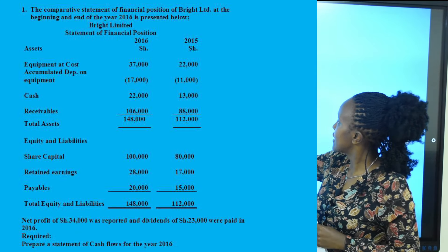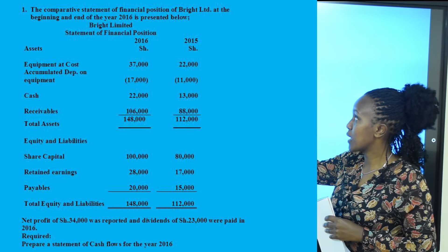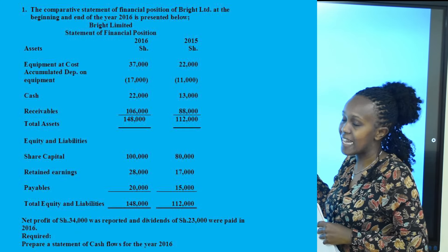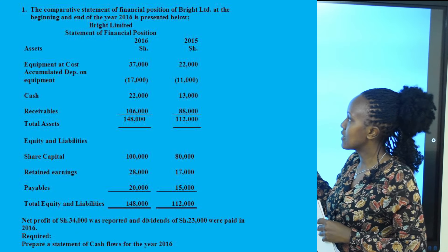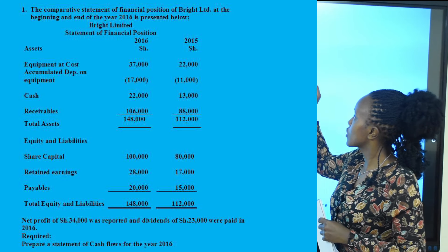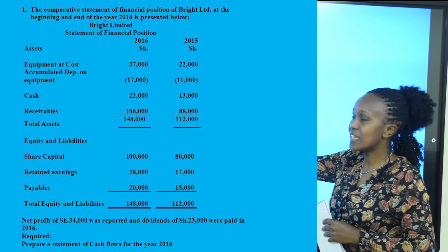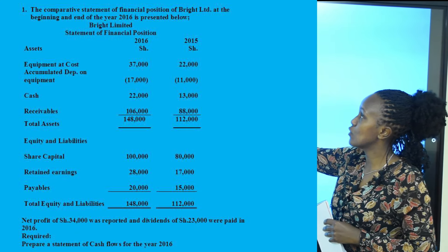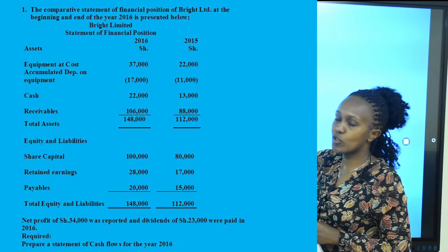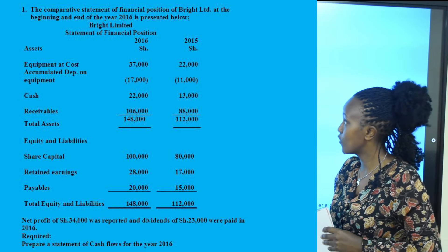For cash, 13,000 shall be the cash at the beginning of year 2016. We are preparing a cash flow statement for 2016, and the 2015 column represents the end of 2015 — which is the beginning of 2016. So the closing balance for 2015 is the opening balance for 2016, which is 13,000. The cash at the end of 2016 is going to be 22,000, and those are the figures we will be reconciling in the cash flow statement.